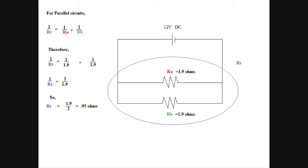The total resistance is equal to 1 over the fraction of 1 over RA plus 1 over RB. Therefore, 1 over RT is equal to 1 over 1.9 plus 1 over 1.9. So, what's going to happen is you get RT is equal to 2 over 1.9. 1 over RT is equal to 2 over 1.9. And so, therefore, the total resistance of the circuit is 1.9 divided by 2, which is .95 ohms.